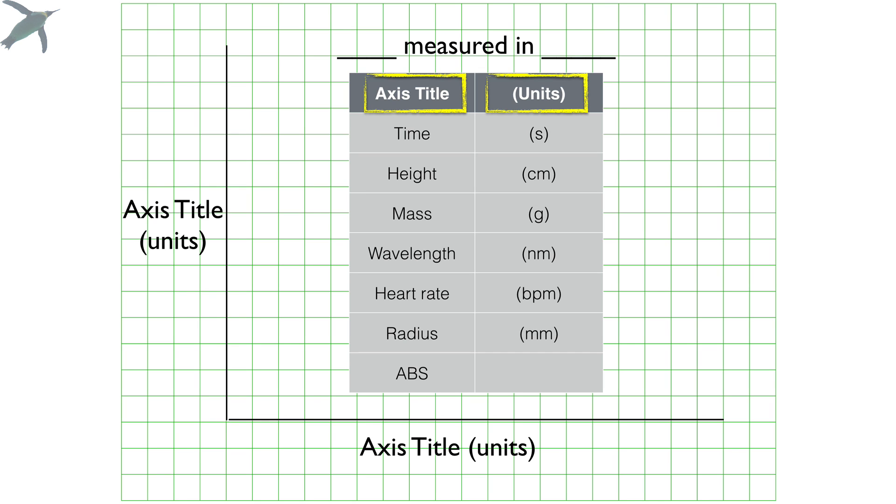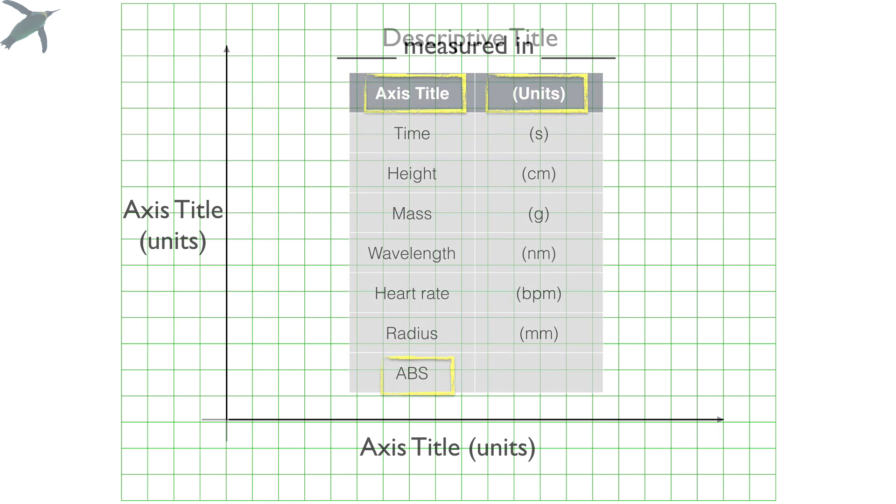The most notable is this guy, absorbance. You'll see sometimes it will be written as just a capital A. It is unitless. So if you are measuring absorbance in a spectrophotometer, you don't need units there. But everybody else is going to need units.